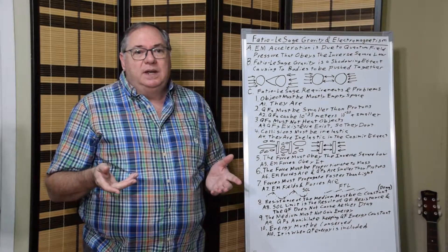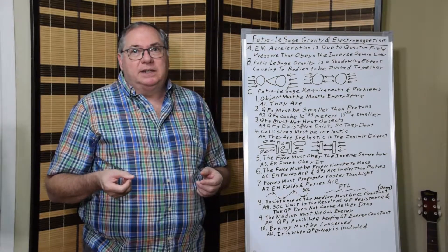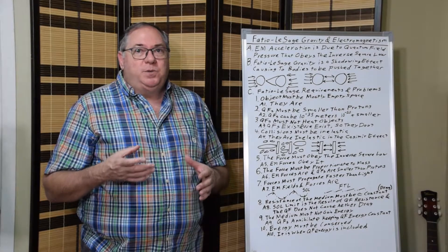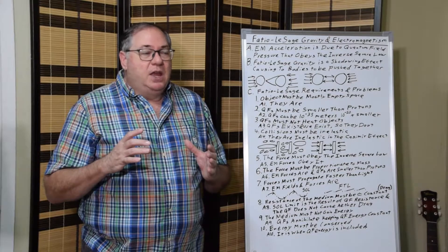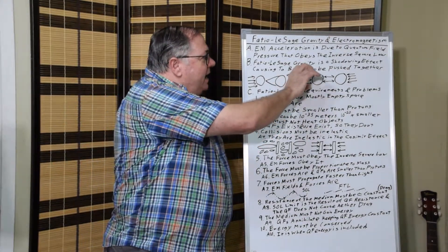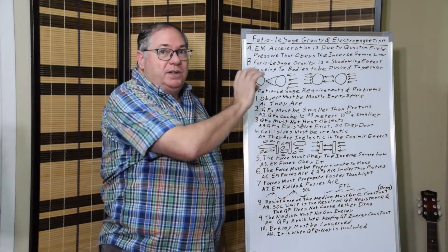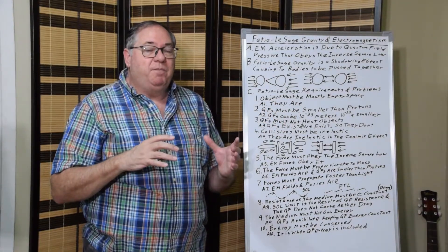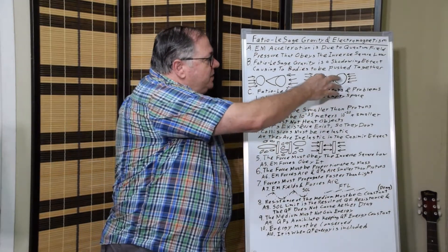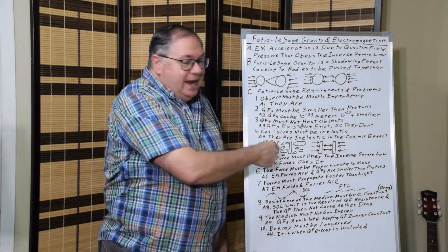And four, collisions must be inelastic. And the difference between elastic and inelastic is, in an elastic case, you would have a body and it would strike quantum fluctuations. Those quantum fluctuations would hit the other side and there would be no loss of energy. So because there's a pressure differential here and here, we know that there is a loss of energy.